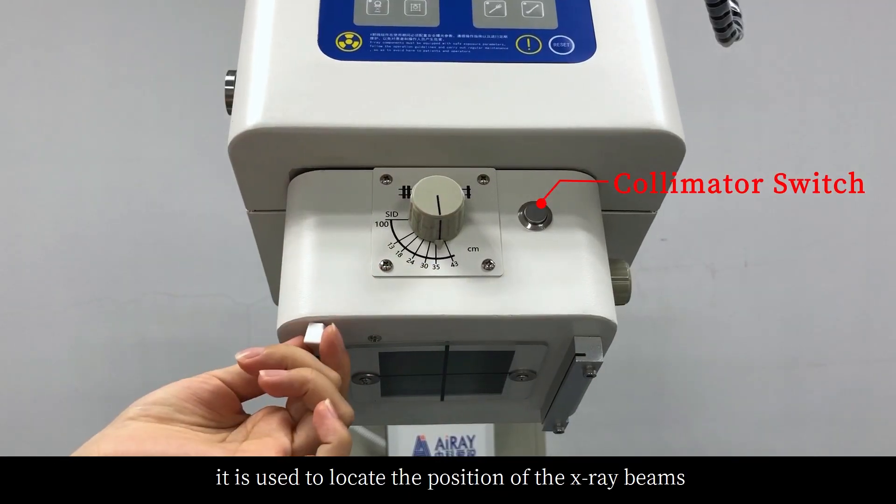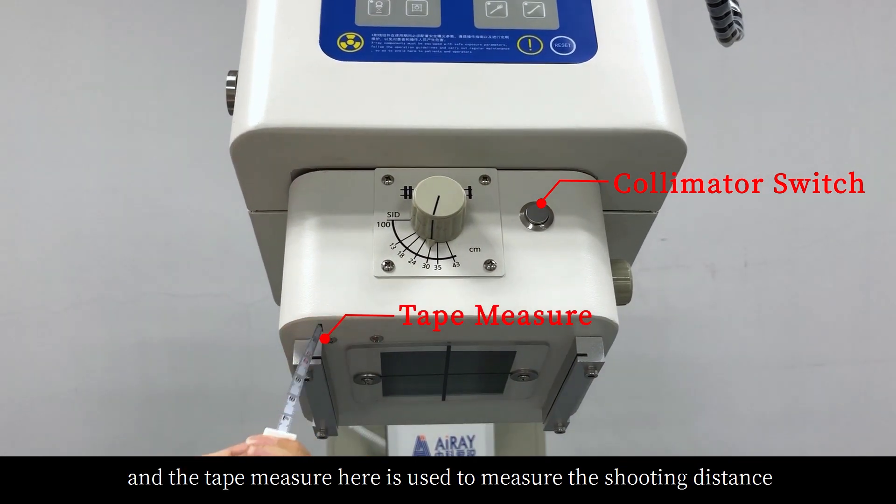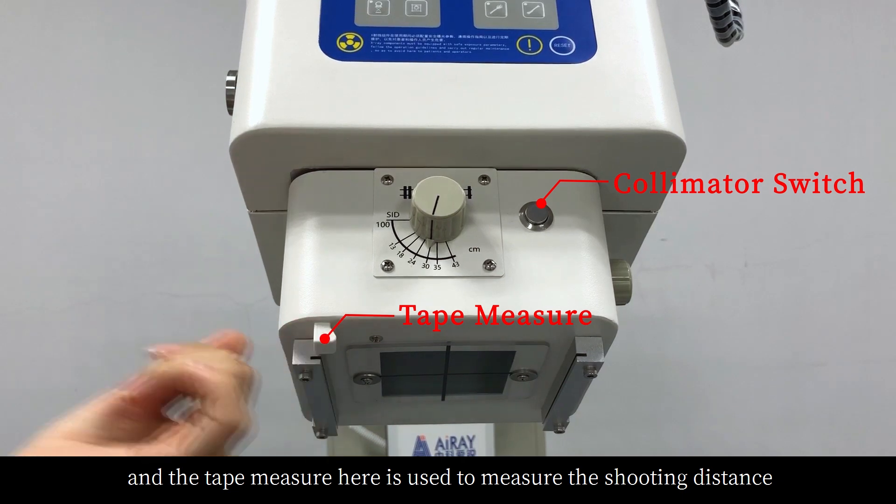This is the collimator. It is used to locate the position of the X-ray beams. And the tape measure here is used to measure the shooting distance.